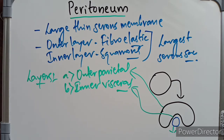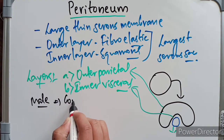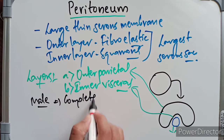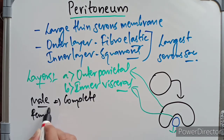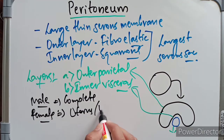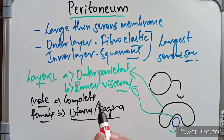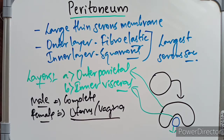There is a difference between the male and female peritoneum. The male peritoneum is complete, whereas the female peritoneum is incomplete because it opens into the uterus and the vagina to the exterior.